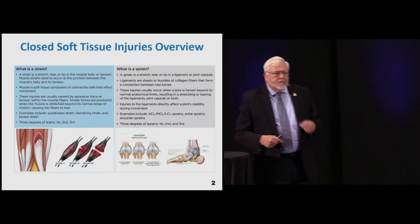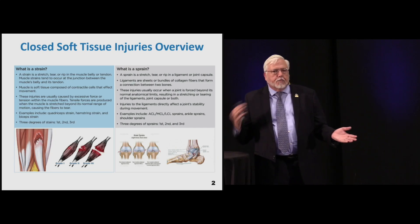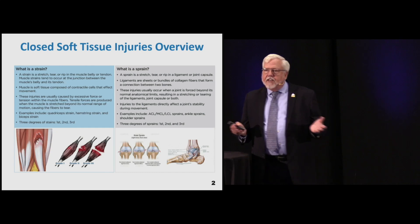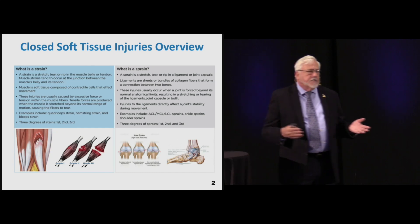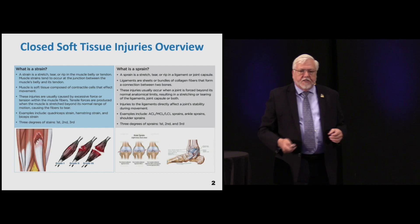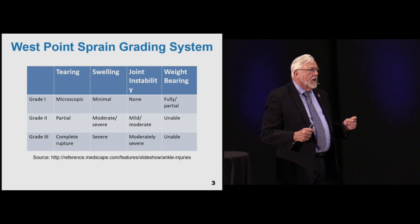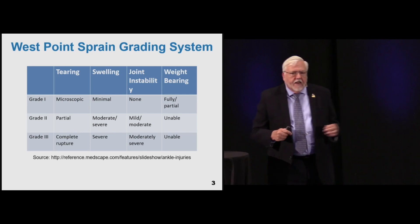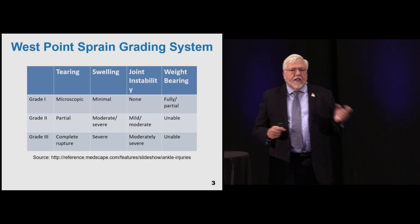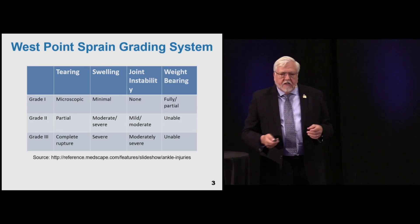This is a great graph showing what a strain is compared to a sprain - you can actually use it to show your patients because they don't understand the difference. The West Point sprain grading system is also a great way of categorizing the kind of injury you have. Grade one through grade three shows the amount of tearing, swelling, instability of the joint, and whether there ought to be weight-bearing.